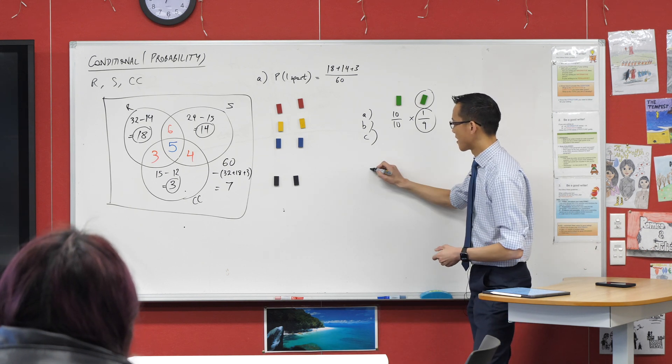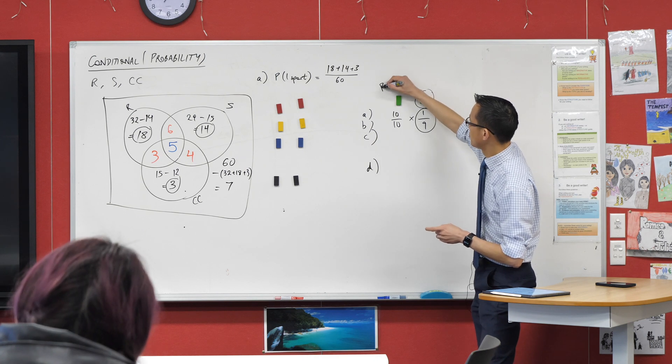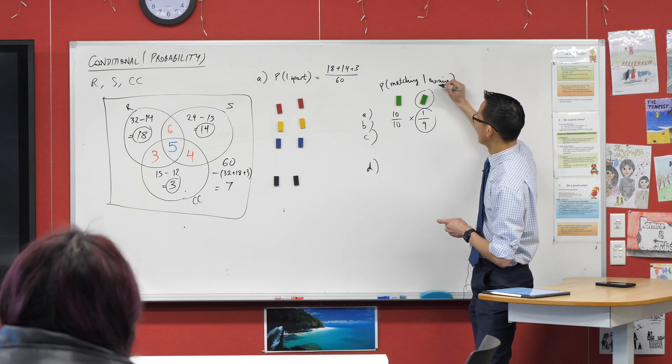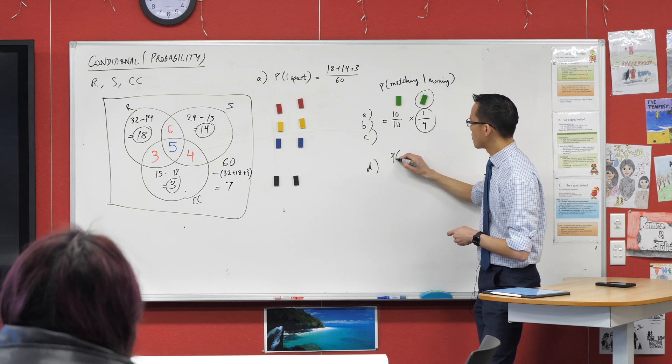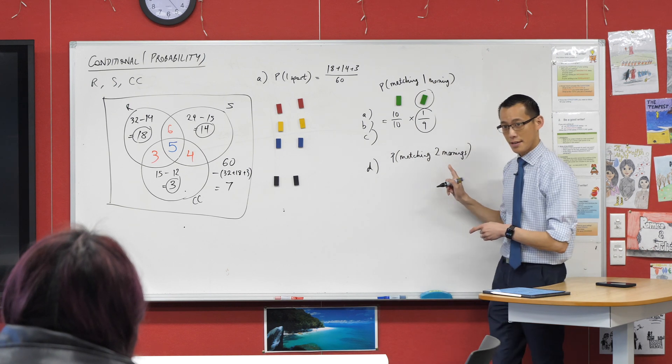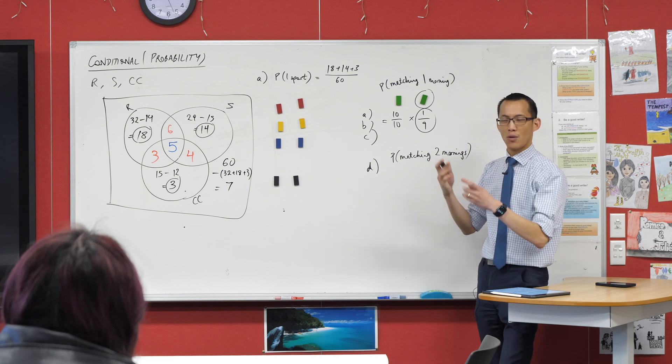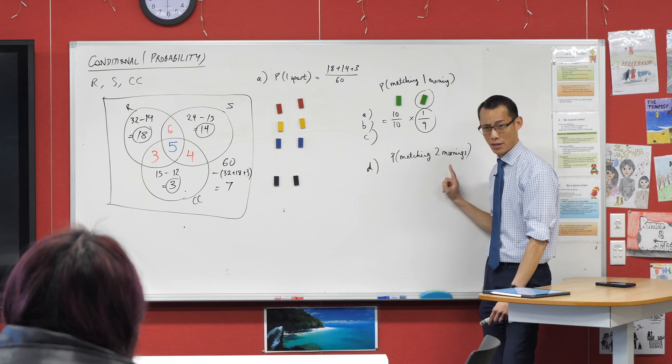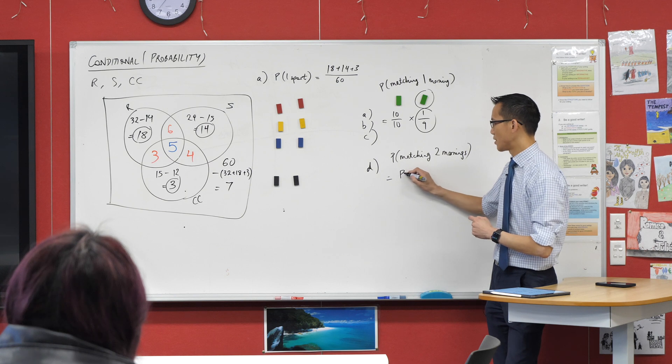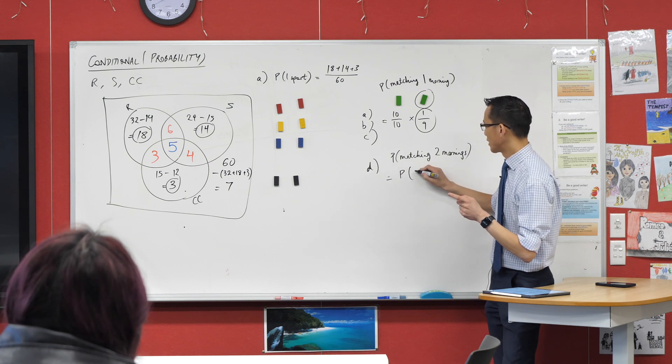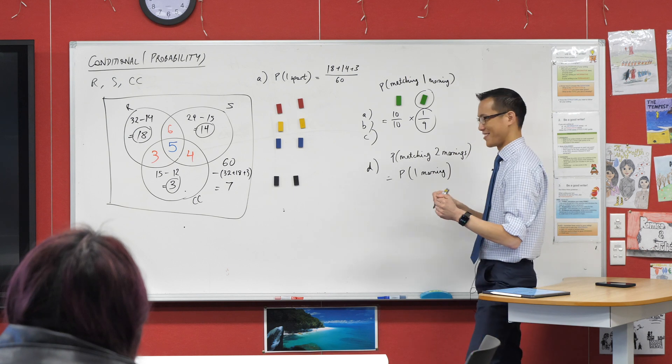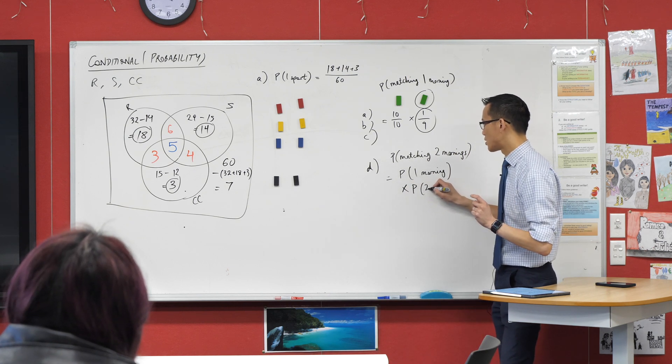All right. Part D, though, this is where things do change, right? So this is the probability of matching socks for one morning. Yep. Equals that. Okay. So now when I think about matching socks for two mornings, now can you see, when I come back on Tuesday, or Wednesday, or whichever day, right, I actually do care what happened the previous morning. I need both of them to be true. So the way that I would actually write this out in my working is, it's the probability of one morning, and then I'm going to use some of the notation that we'll use in the other question, if we get to it, right? I need to multiply by the probability of the second morning.